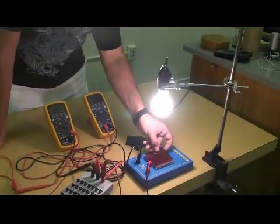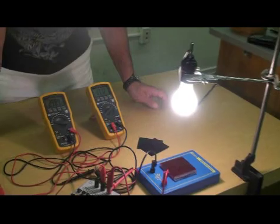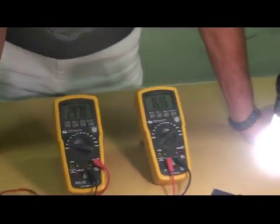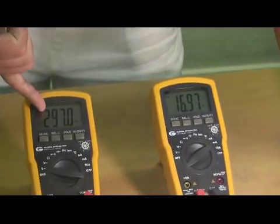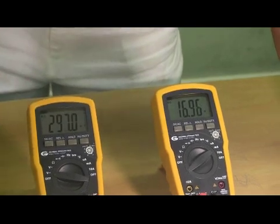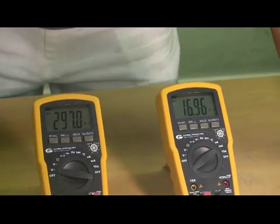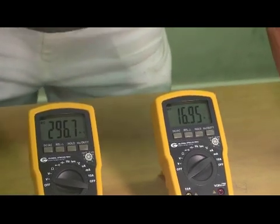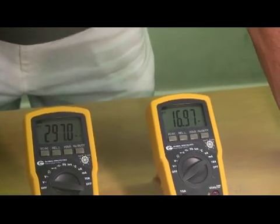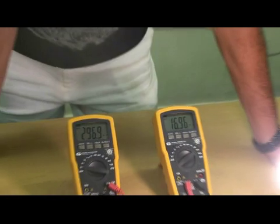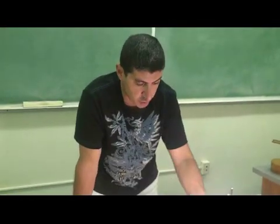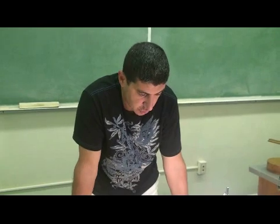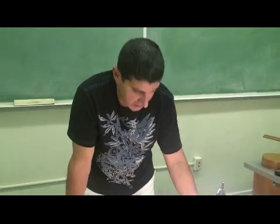And then when we put the red, it even goes more up. So it goes almost as high as what we began with, 297 millivolts, 16.95 milliamps. So it went almost to its original state. So the red allows the most energy to be penetrated through the photovoltaic cell. Then it's blue, then it's green.